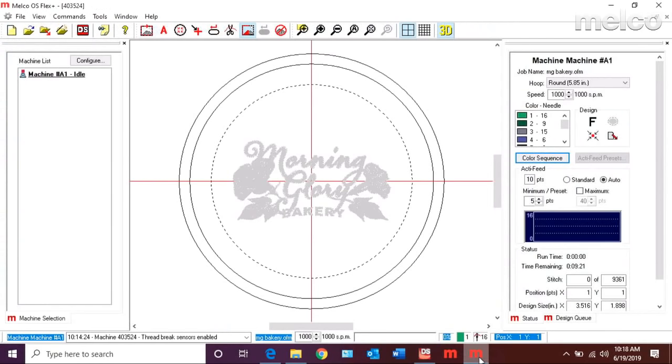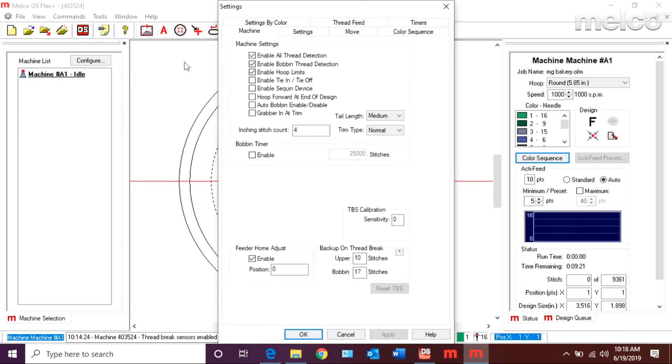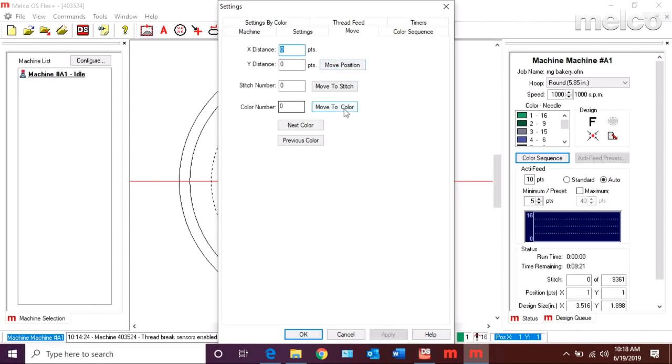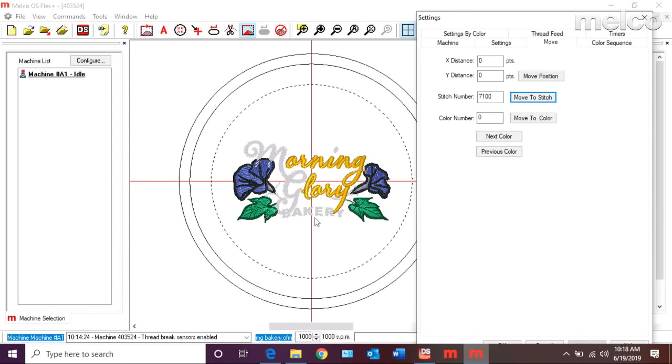I would go back to OS. I could go tools, settings, and the move. That's how I move in the advanced mode. And I would move to a certain stitch. I say I put in 7100. Move to stitch. If I move this out of the way, you can see it's colorized where it is. So, the dot isn't colorized. So, I know I haven't got there yet.